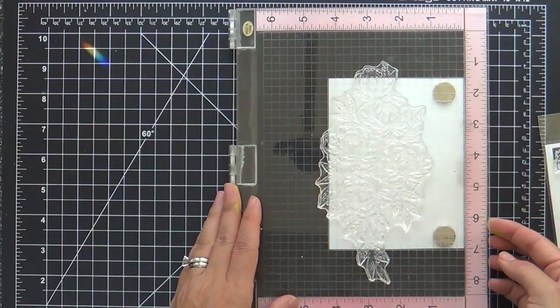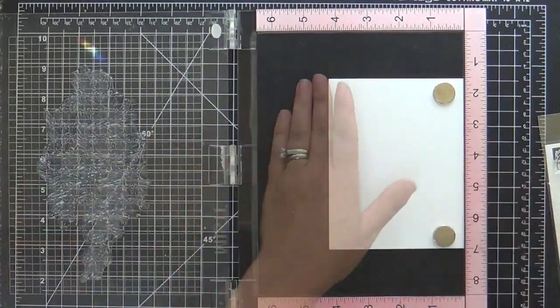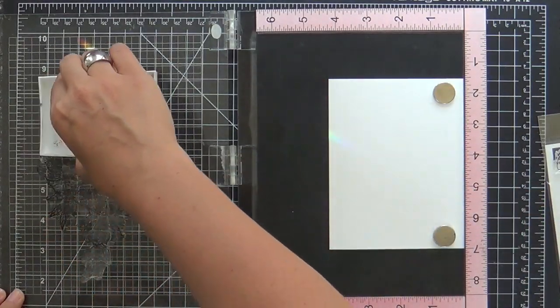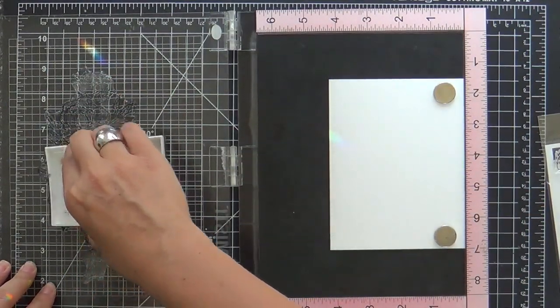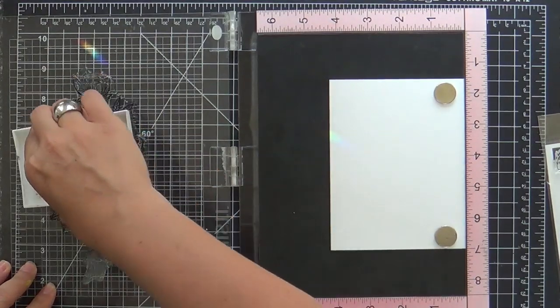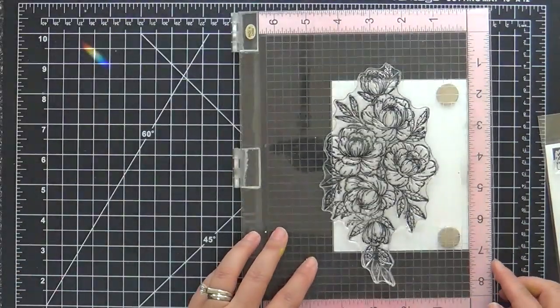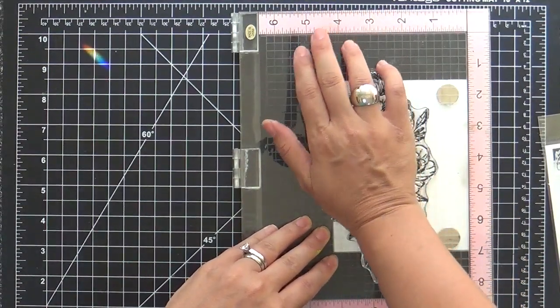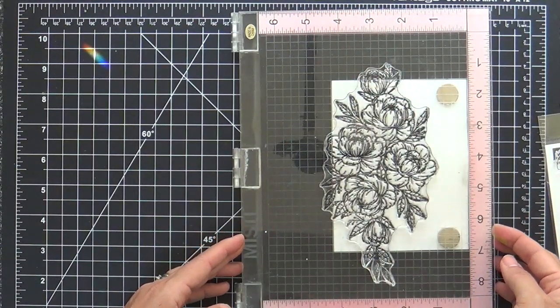So I'm going to start with this large floral image. I have a panel of Nina Solar White cardstock. I'm inking up the image with black ink and I'm using VersaFine Onyx Black Ink. I'm just stamping it black onto the white. There's a lot of things you could do with this image.